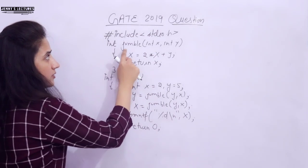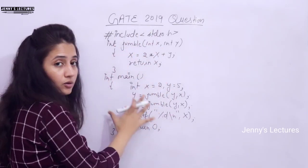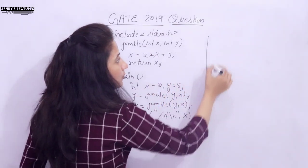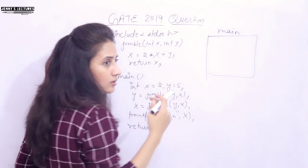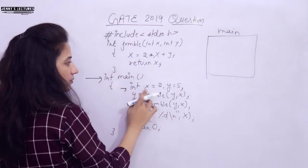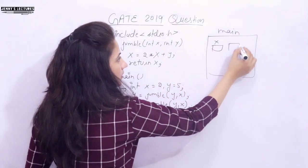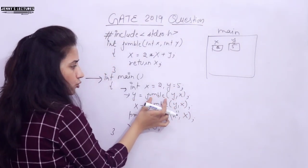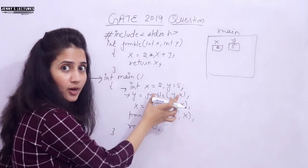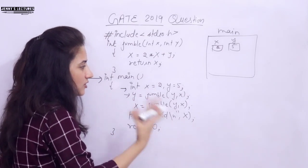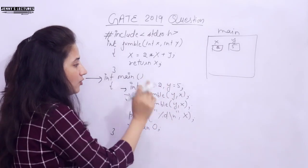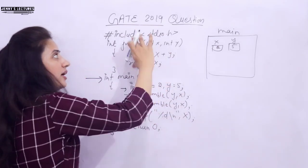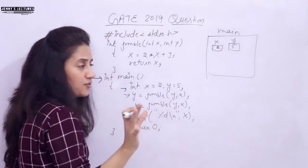Here I am discussing this question. See, here we have one function jumble. Whenever you execute this thing, first of all control will go where? To the main function. Some memory would be allocated to this main function because in main obviously we will have maybe some local variables. Here we have only function calling and this is function definition, no declaration. Why? Because here we are calling this function before calling, we are defining this function. So in this case, no need to declare the function.